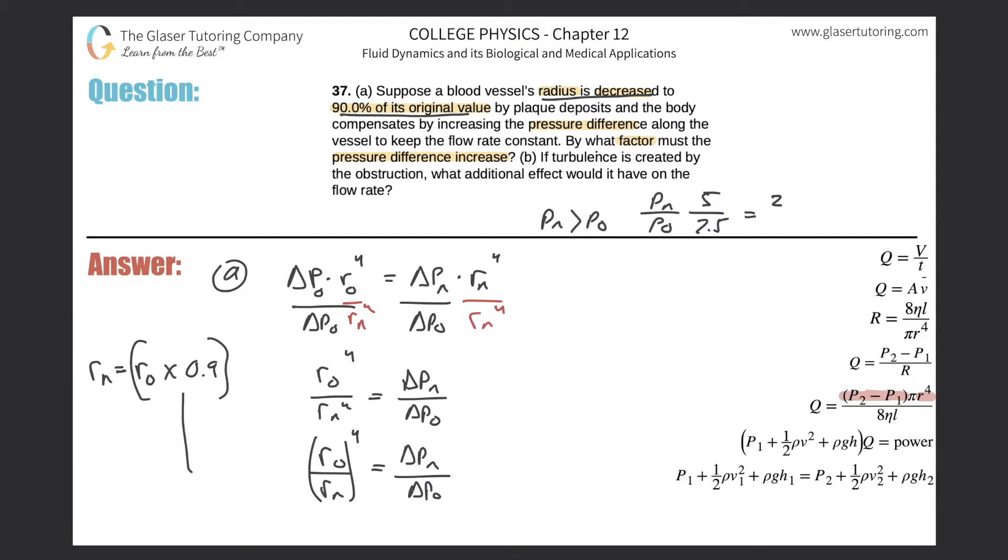We can take this now and plug that in for r_n. Over here on the right-hand side, we now get r_o over r_o times 0.9, this whole thing raised to the fourth power, equal to delta P_n over delta P_o. Notice the r_o's cancel. Now we're left with 1 over 0.9 raised to the fourth power will equal delta P_n over delta P_o. Plug that into the calculator: 1 divided by 0.9, raised to the fourth power, and we have 1.52.